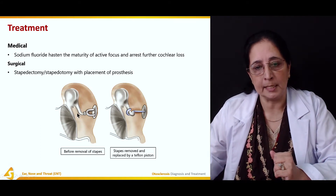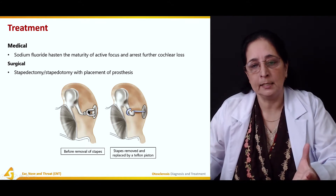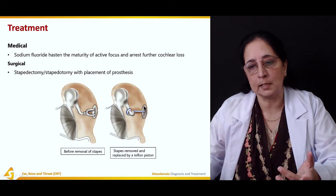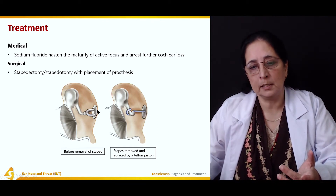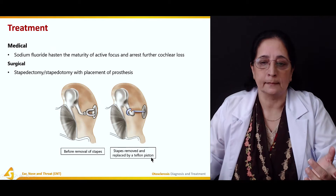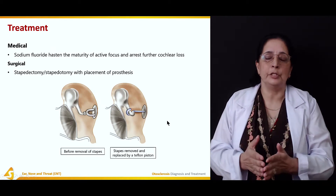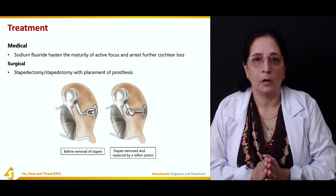If you see this picture of the middle ear with all the ossicles — this is the stapes — once the stapes is removed, a prosthesis is put in after the surgery. The stapes is removed and replaced by a Teflon piston. That's how the prosthesis looks after the stapes is removed. This is the surgical procedure performed to cure otosclerosis.